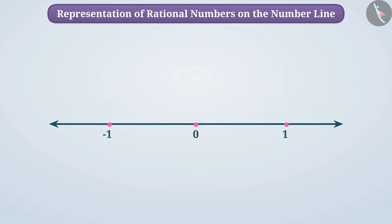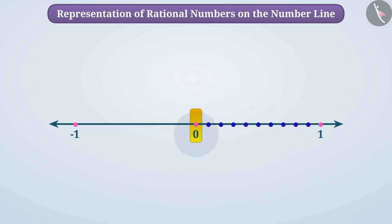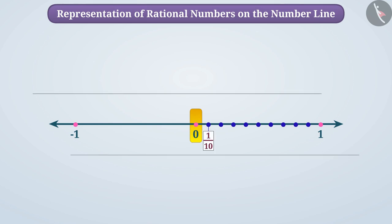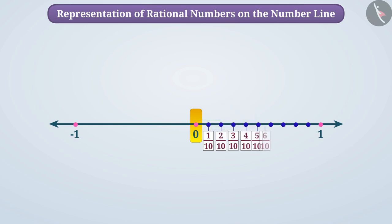Let's make 10 equal parts of the unit distance between 0 and 1. In this way, each of these parts will be 1 by 10th part of the unit distance. If we start with 0, the number 1 by 10 can be shown on the number line by taking one part from it. In the same way, two parts can be shown by 2 by 10, 3 by 10, and so on. By taking 10 parts out of 10, you can show a complete unit, that is 1.